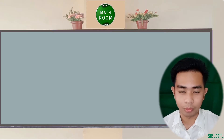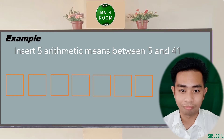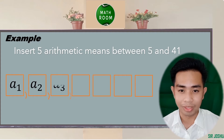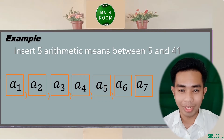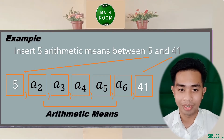Let's have an example: insert 5 arithmetic means between 5 and 41. Since we are required to insert 5 terms, there are 7 terms in all. We can draw 7 squares corresponding to each term: a sub 1, a sub 2, a sub 3, a sub 4, a sub 5, a sub 6, and a sub 7. We substitute 5 for a sub 1 and 41 for a sub 7, and we need to solve for a sub 2 through a sub 6.